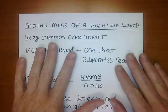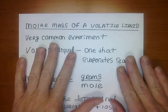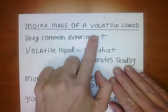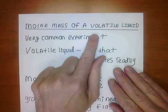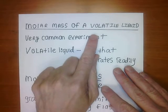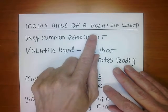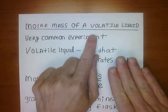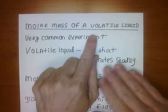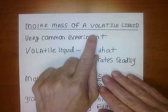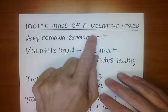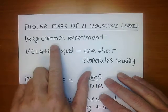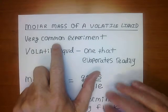The purpose of this experiment is for you to determine the molar mass of a volatile liquid. This is a very common experiment — you will see it in almost every general chemistry lab book out there in some form or another.